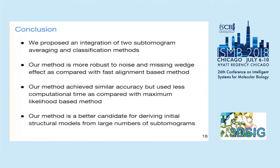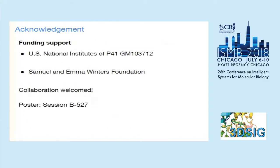To conclude, we propose an integration of two subtomogram averaging and classification methods. Our method is more robust to noise and missing wedge effects as compared to the fast alignment based method. Our method achieves similar accuracy while using less computational time as compared with the maximum likelihood based method. Therefore, our method is a better candidate for deriving initial structure models from large numbers of subtomograms. We thank our funding support, and I will present two deep learning based works for subtomogram analysis tasks at my poster at 6 o'clock.